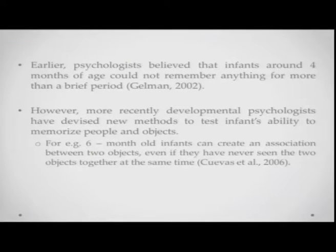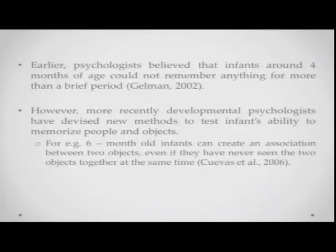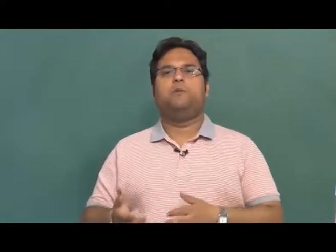Earlier it was believed that infants around 4 months of age could not remember anything for more than a very brief period of time. This finding could be a result of the testing methods available then. More recently, developmental psychologists have come up with new ways to test infant memory, and have found that around 6-month-old infants can actually create associations between objects even though they have not seen those objects presented together before. Research is suggesting that cognitive psychologists may have underestimated memory skills in children at given ages.